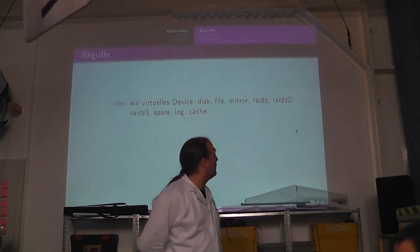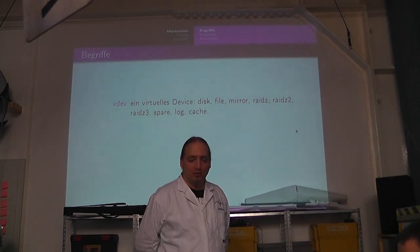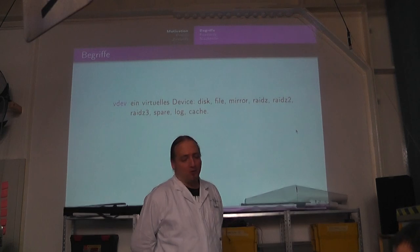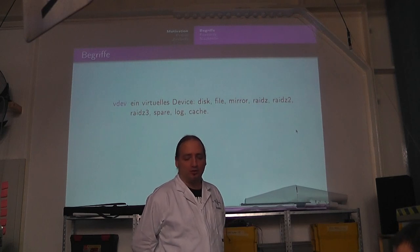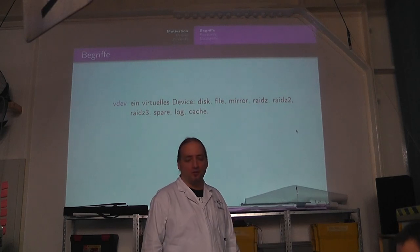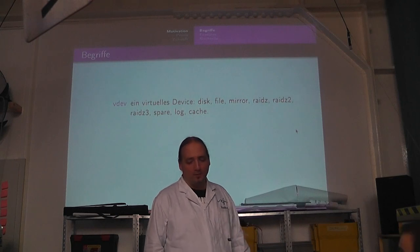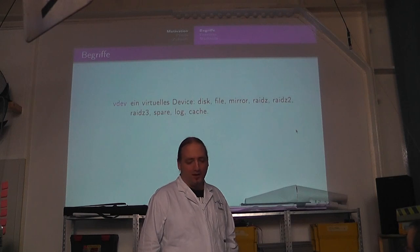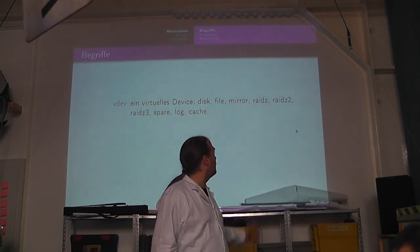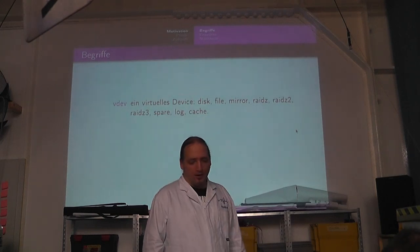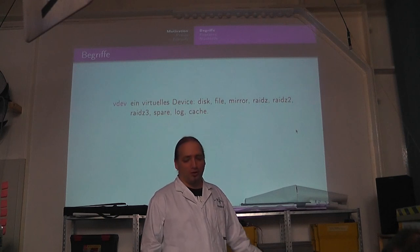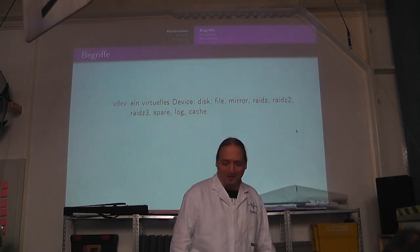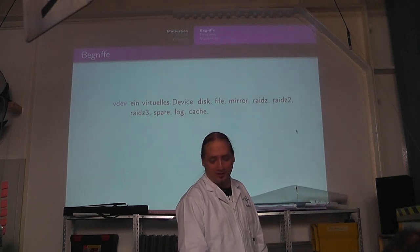Damit wir uns auch verstehen, führe ich erstmal ein paar Begriffe ein. Da gibt es einmal die VDEVs – das sind virtuelle Laufwerke, können auch wirkliche Laufwerke sein. Da gibt es verschiedene Typen: Disk ist halt eine Festplatte oder eine Partition. Man kann eine Datei als Backend nehmen, das ist allerdings nur für experimentelle Zwecke geeignet. Mirrors, verschiedene RAID-Level. Spares und Logs und Caches sind so komische Dinger, die man braucht, wenn man mit ganz vielen Festplatten macht.